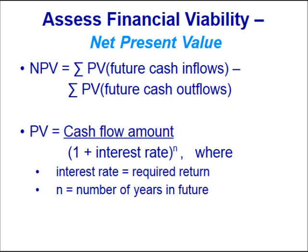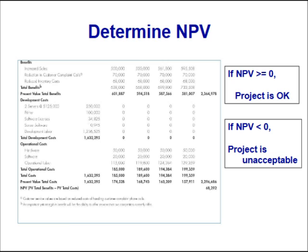To assess financial viability using net present value: NPV equals the summation of future cash inflows minus the summation of present values of future outflows. Present value equals the cash flow amount divided by (1 + interest rate) to the power N, where interest rate is the required return and N is the number of years in the future. If NPV is greater than 0, the project is acceptable; if NPV is less than 0, the project is unacceptable.